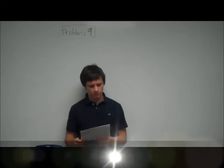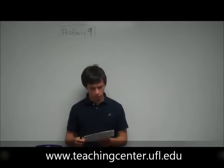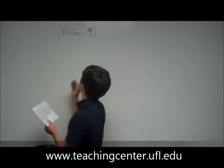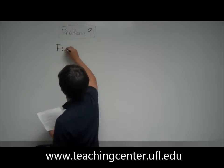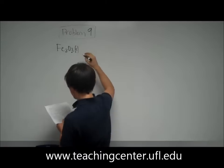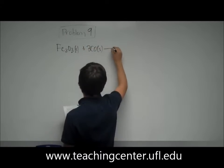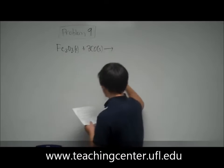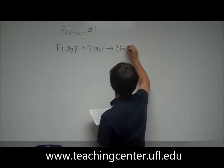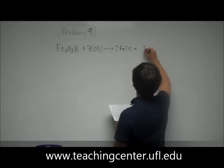Question number nine. The following reaction is used to obtain iron from iron ore. So it's Fe2O3. I'll write it up here. Fe2O3 plus 3CO forms 2Fe plus 3CO2 gas.